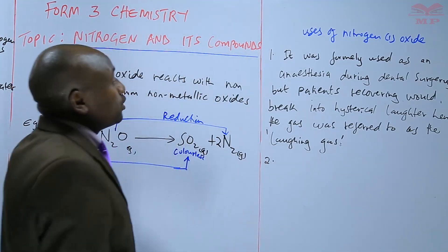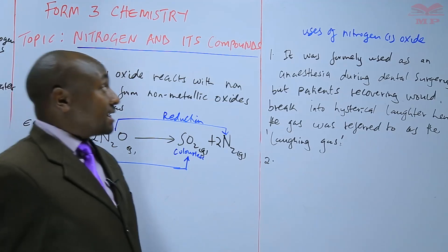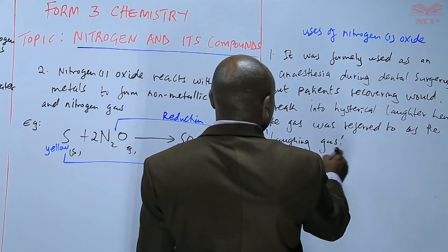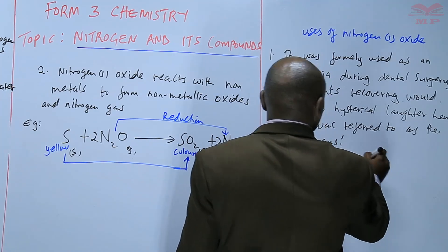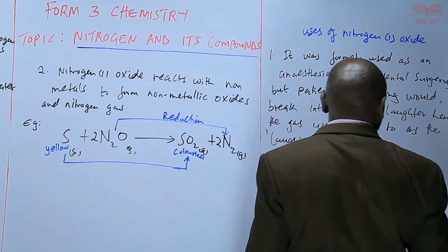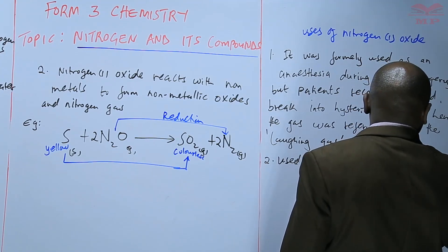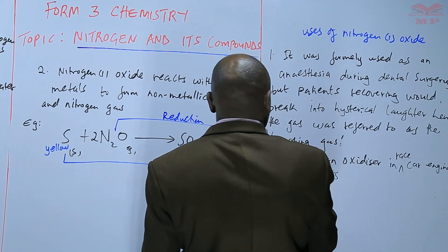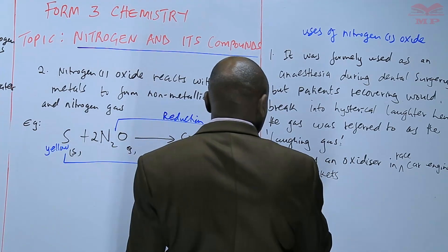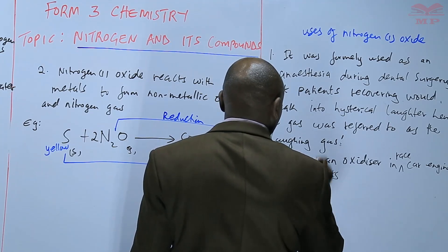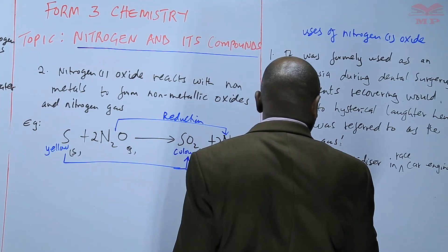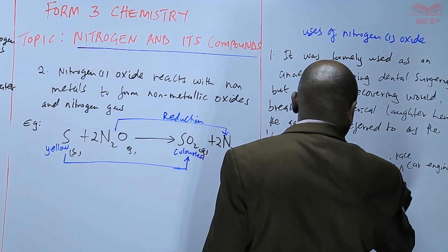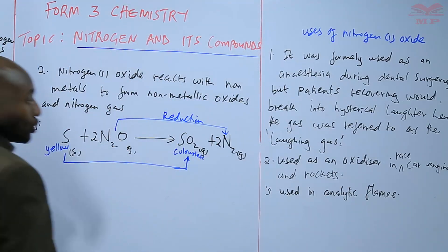The other uses of nitrogen one oxide are based on the fact that it has properties similar to oxygen. It is used as an oxidizer in car engines, especially race car engines, and in rockets. It is also used in analytical flames. All these uses are based on the fact that it supports combustion.